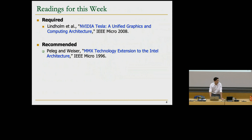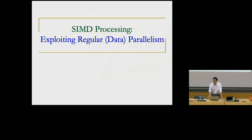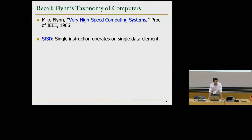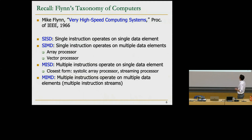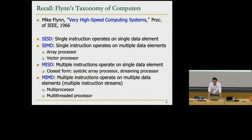Recall that SIMD processors are very good at exploiting regular data parallelism, though not so good for irregular data parallelism — though GPUs are closing this gap. SIMD processors and GPUs correspond to one of Flynn's four categories from 1966: single instruction single data (SISD), SIMD — covering array processors, vector processors, and GPUs — multiple instruction single data (MISD), and multiple instruction multiple data (MIMD), which includes multi-core processors.